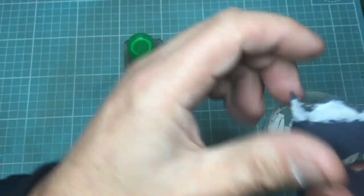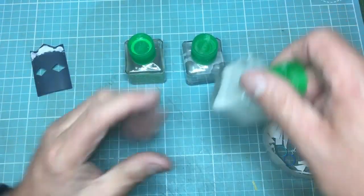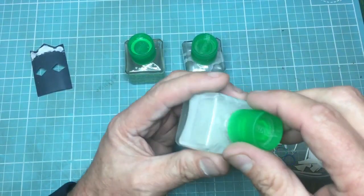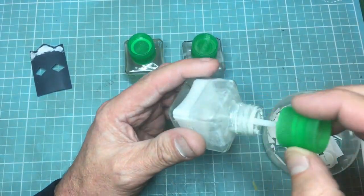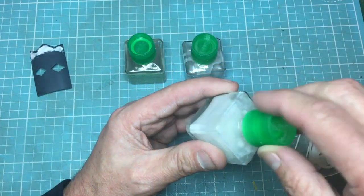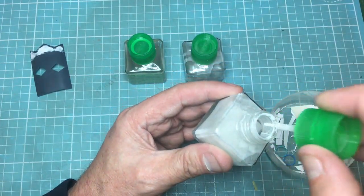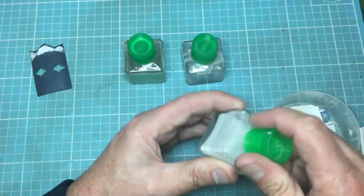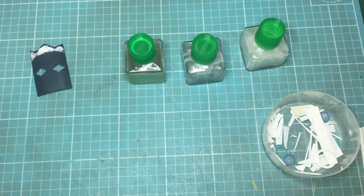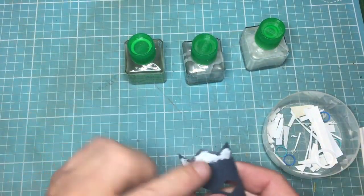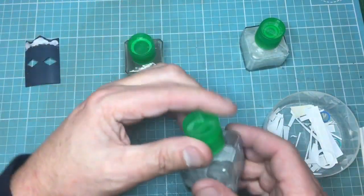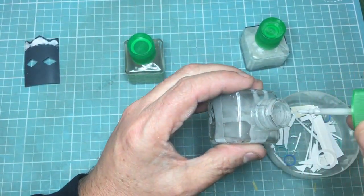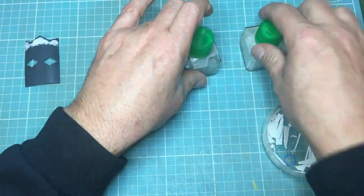If you try sanding it when it's too soft, it just rips off. Consistency: I've heard people say thin it until it doesn't string. Well, if you can see, this is stringing, and this is the consistency I like. If you thin it much thinner than this, I find personally it shrinks back too much. But then having said that, I've put too much on here.